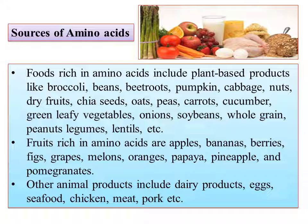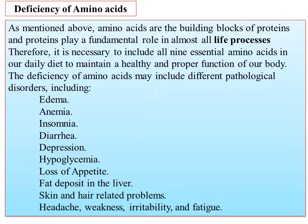For non-vegetarians, protein-rich edible products include egg, seafood, chicken, meat, and pork. The amino acid is the monomer unit of the protein, and protein deficiency relates to amino acid deficiency.